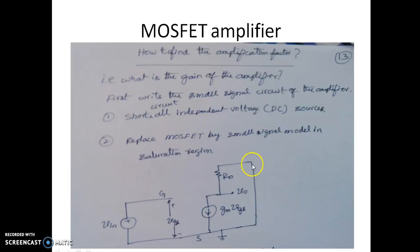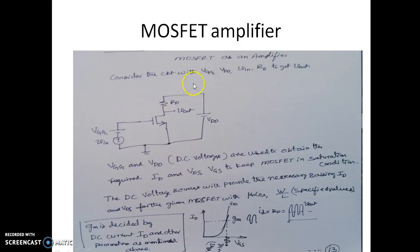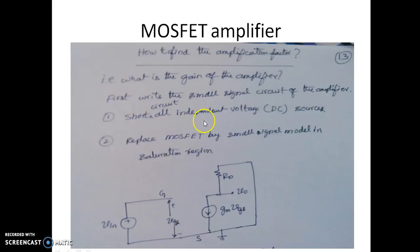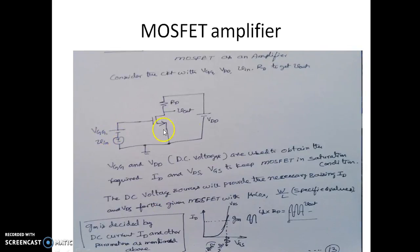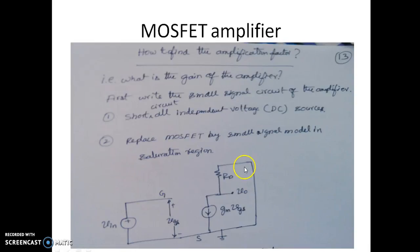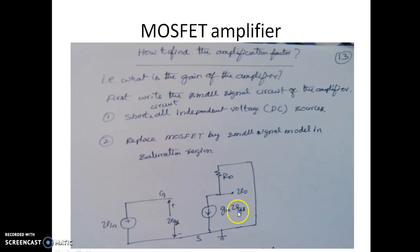To find the amplification factor — the gain of the amplifier — we write the small signal model for the given circuit. The first step is to short circuit all independent DC voltage sources. Here VGG and VDD are shorted. VDD is shorted to ground, and the MOSFET is replaced by its small signal model in the saturation region — a voltage-dependent current source of magnitude GM into VGS.